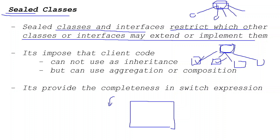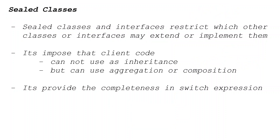Sometimes, as an interface designer or class designer, you want a class to only be implemented by a specific set of subclasses. The sealed keyword helps us apply those restrictions. So whenever you are writing a new class or new interface and you want it to have only two subclasses or only three implementation classes, this is a very good feature of Java sealed classes.